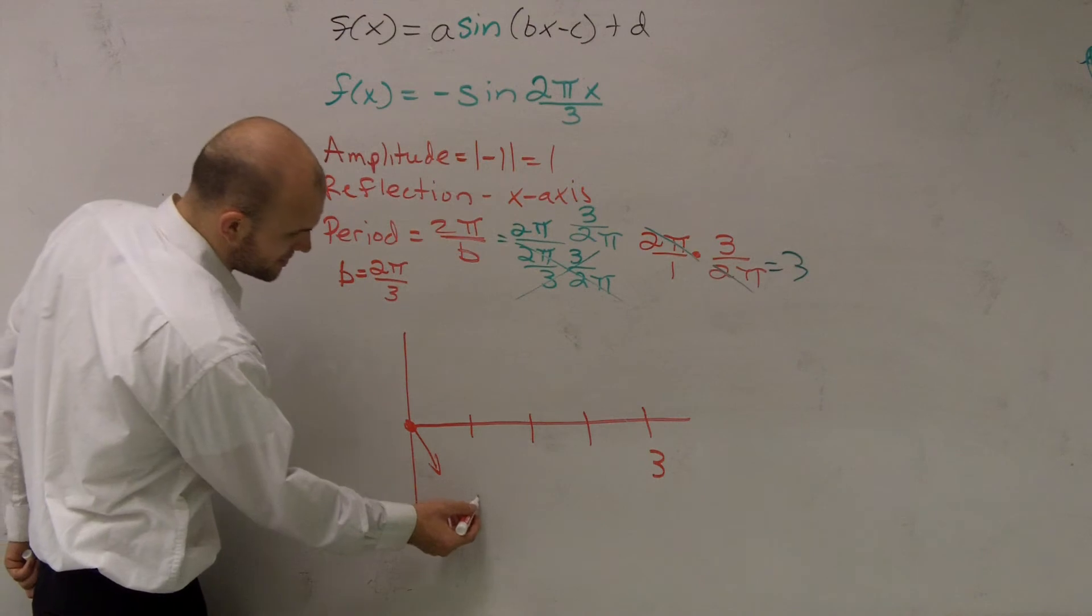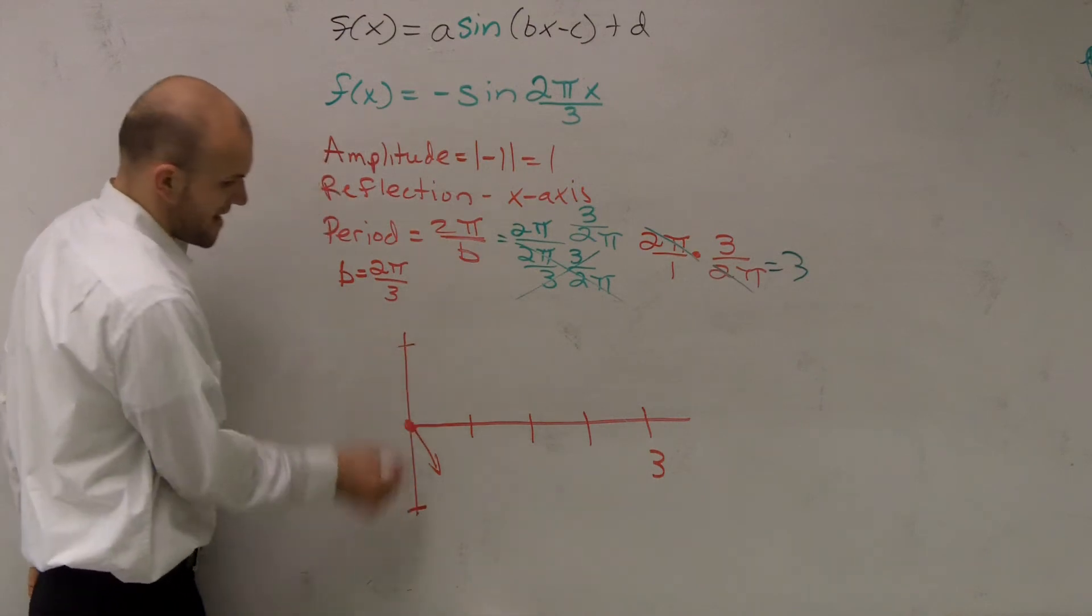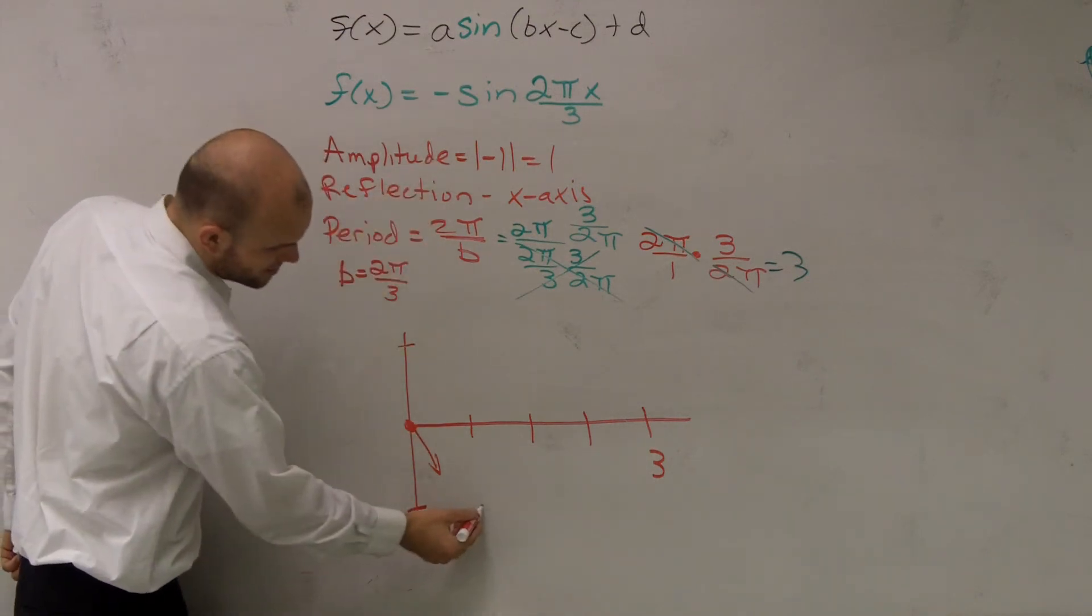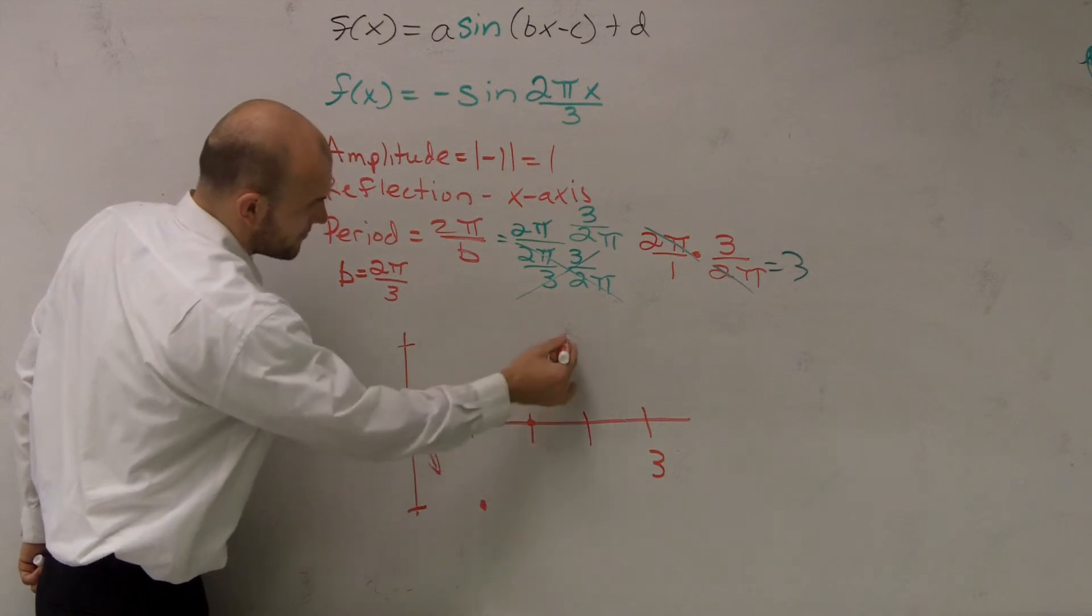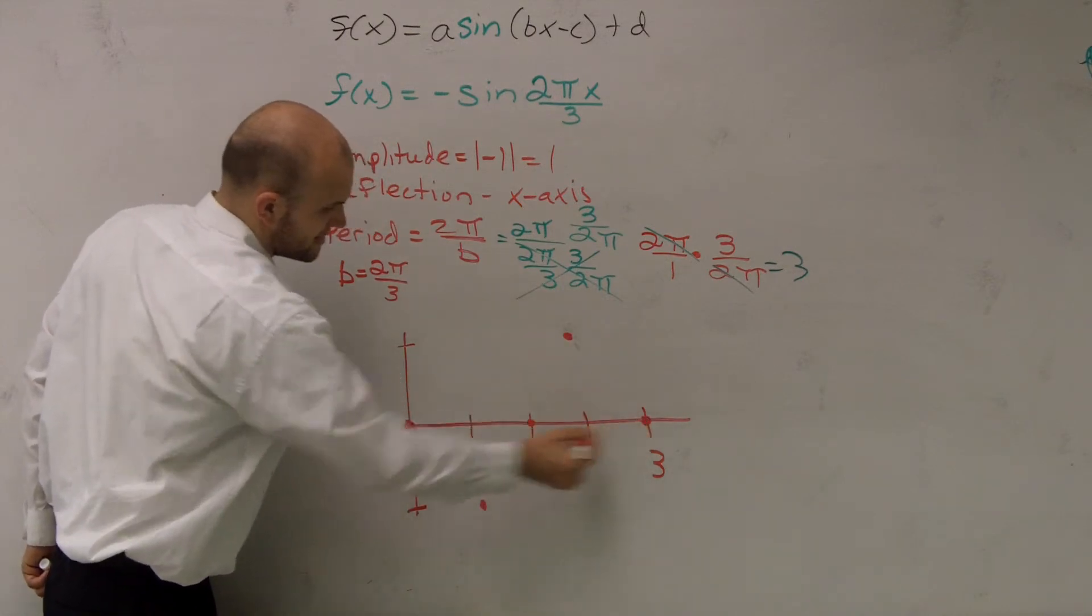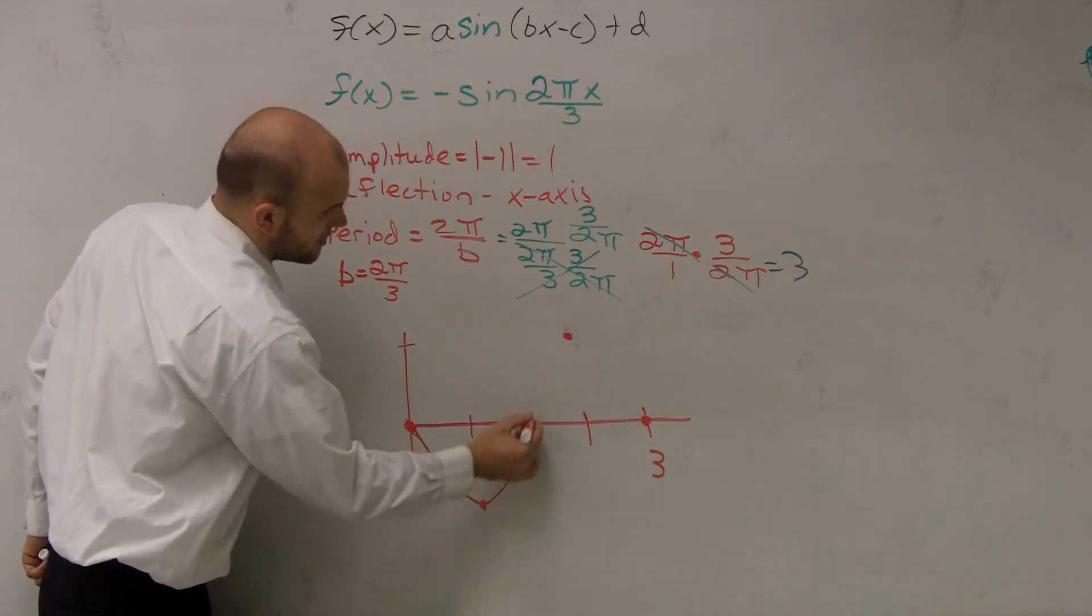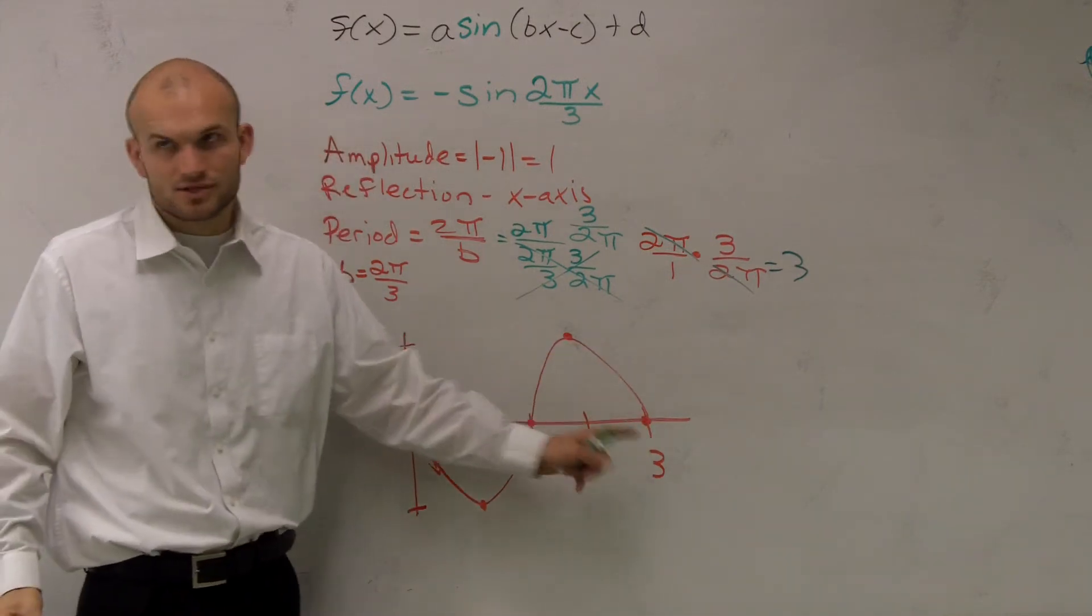Right? So my graph is going to have a maximum minimum of 1. So it's going to go down here, up to here, and it's going to end here. Now, my only problem is I need to figure out what are these intervals. They're not by 1.